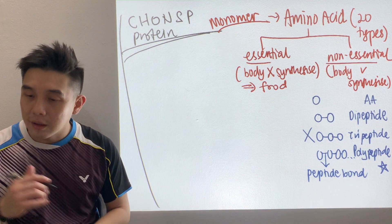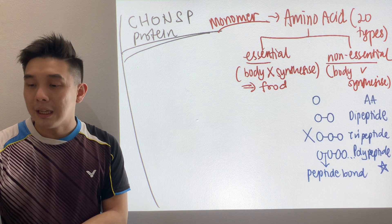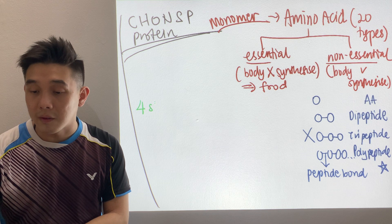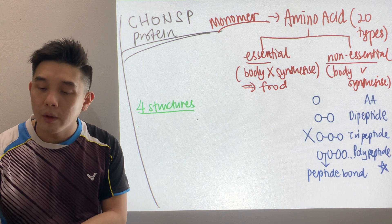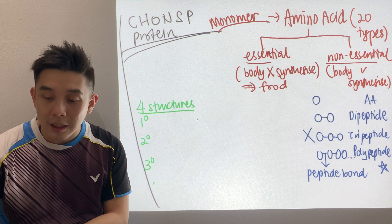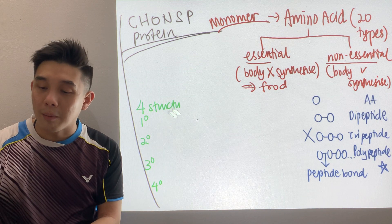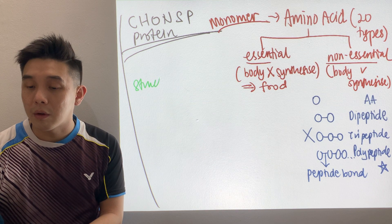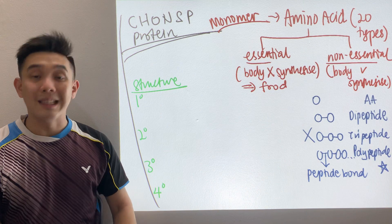So, the basic stuff is settled. Now, in short, there are four structures of protein that you have to study. There are four structures of protein: primary, secondary, tertiary, and quaternary.